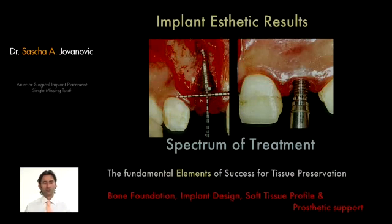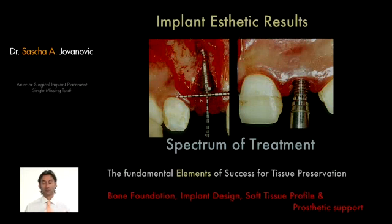Now, what are the aesthetic results we'd like to achieve and what are our criteria? There are fundamental elements for success when preserving tissue for implant aesthetics. One area of treatment is that we can really preserve the tissues optimally. On the right hand side, you see a single tooth implant replacing a lateral incisor — it's a flapless approach, no incision is being made, and the implant is placed straight into the existing ridge. This is what we call minimally invasive therapy.